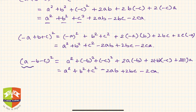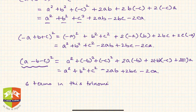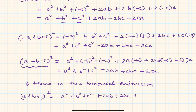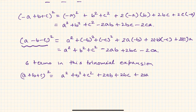Notice how many terms are there in this trinomial expansion — there are six terms. Now let's write the identity once more: (a + b + c)² = a² + b² + c² + 2ab + 2bc + 2ca.